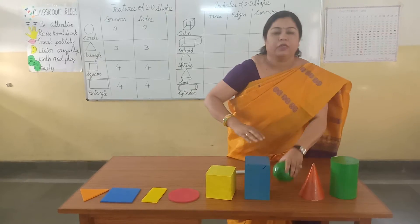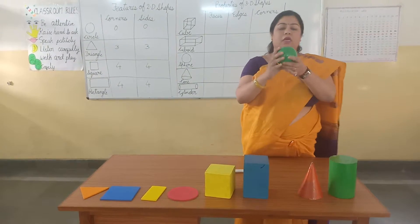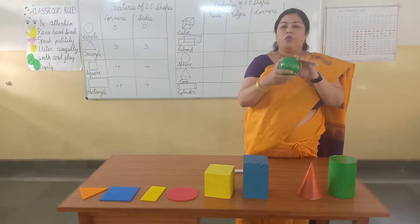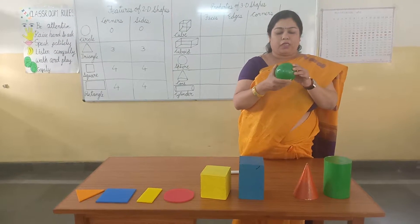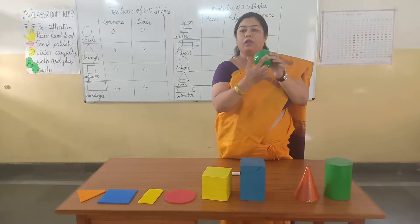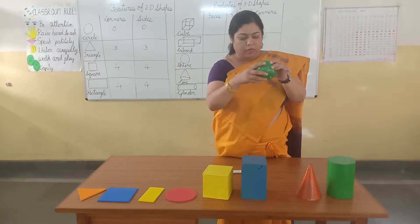The next shape is a sphere. You can see, sphere has no corners and no edges. It has only 1 curved face.